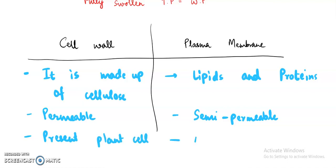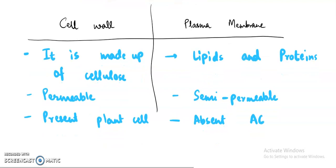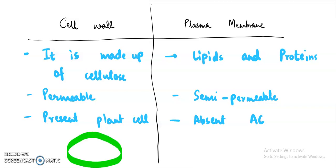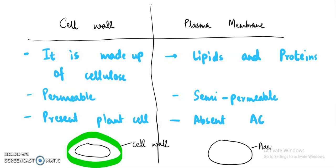Cell wall is absent in animal cells. In such comparison questions, always make a diagram. Cell wall is the outermost boundary of the plant cell. For plasma membrane, it would be great if you could draw the fluid mosaic model — that was the bilayer model. If you haven't watched my video on plasma membrane, please visit it; I'll give the link in the i-button on the extreme right side.